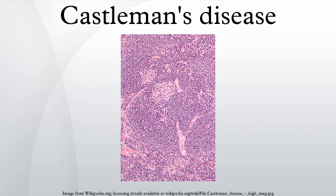Siltuximab, a monoclonal antibody that binds interleukin-6, preventing it from binding to the IL-6 receptor, was approved by the U.S. Food and Drug Administration for the treatment of multicentric Castleman disease on April 23, 2014. Preliminary data suggest that treatment with Siltuximab may achieve tumor and symptomatic response in 34% of patients with MCD. Other treatments for multicentric Castleman disease include corticosteroids, chemotherapy, and thalidomide.